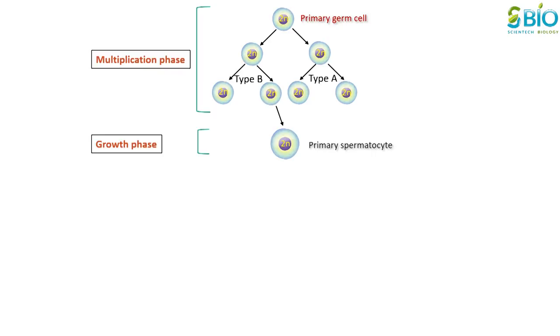They obtain nourishment from the nursing cells or Sertoli cells. At the third stage of spermatogenesis, also called the maturation phase, each primary spermatocyte undergoes two maturation divisions.